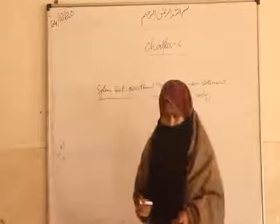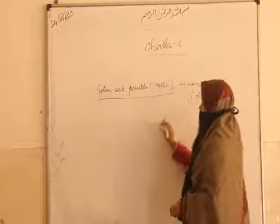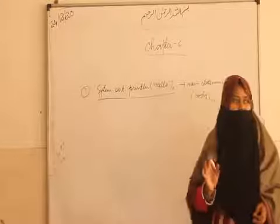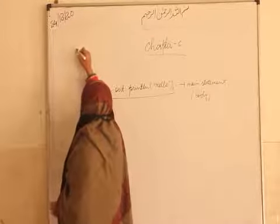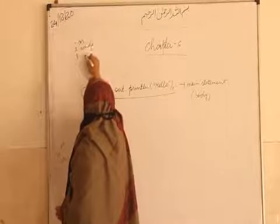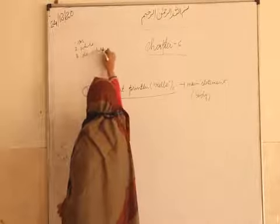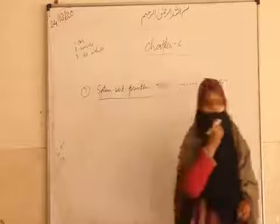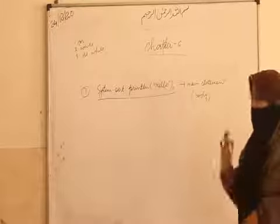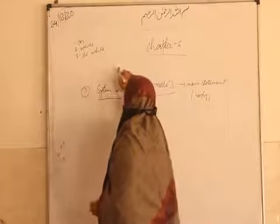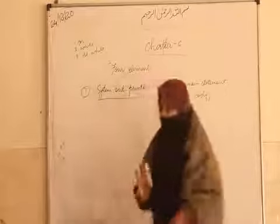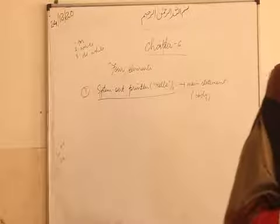Coming to looping — the first thing is the body. Whether you do any kind of loop, basically in Java we have three kinds of loops: for, while, and do-while. Any loop we are going to use will have four basic elements. The first element is the body — you should know what you have to repeat.